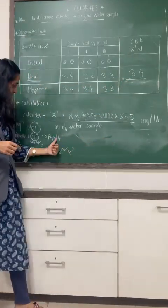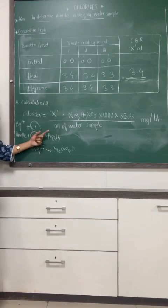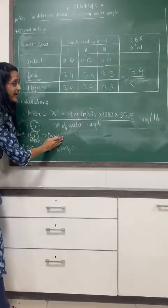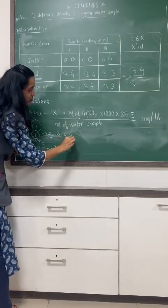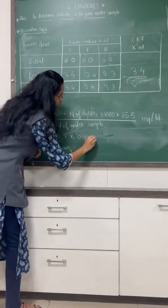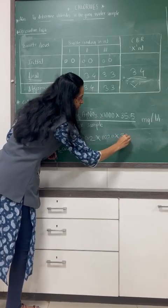So 3.4 ml of Ag is used by Cl. This is nothing but X. Note down that X and put that value. It is 3.4 times the normality, 0.02 times 1000 times 35.5.